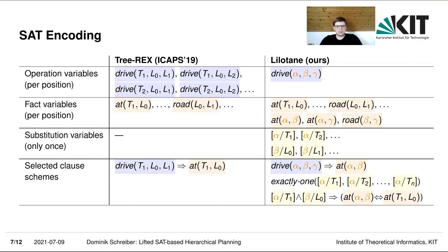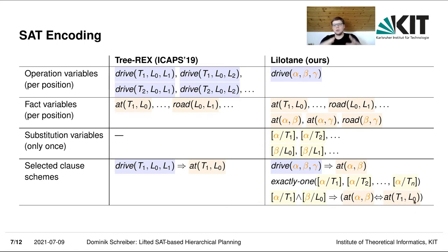For the logic encoding, we also need clauses which constrain the variables with one another. In the TreeRex encoding, for example, there is a precondition constraint that the action driving truck one from L0 to L1 requires that truck one is at L0 before. We add these constraints as well, just with a symbolic representation, plus some additional kinds of clauses. For example, we constrain that exactly one substitution must be active for each variable, and if we replace alpha with truck one and beta with location zero, then the fact at alpha-beta must be equivalent to the fact at T1L0.